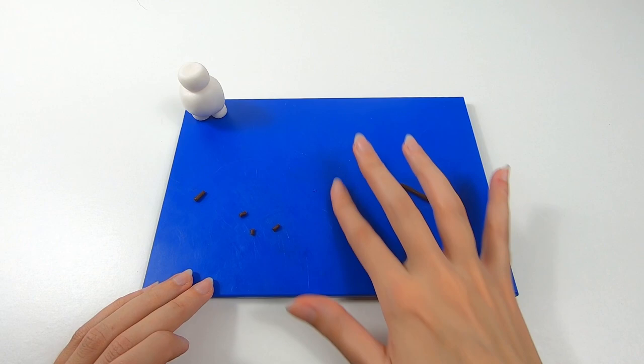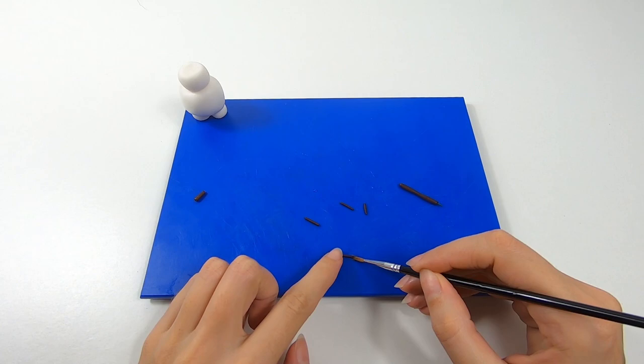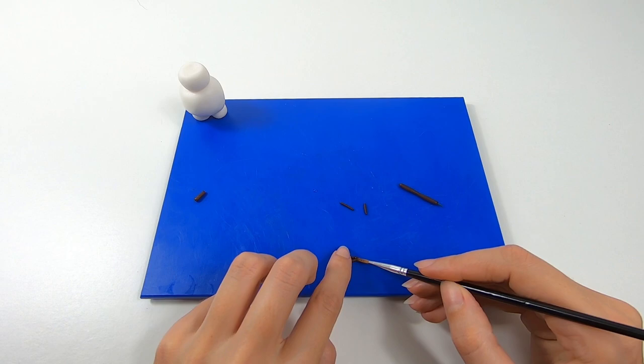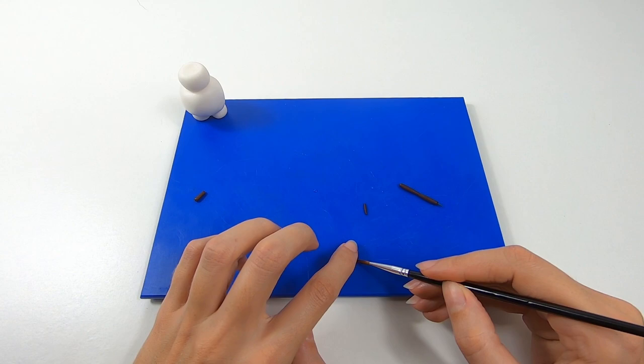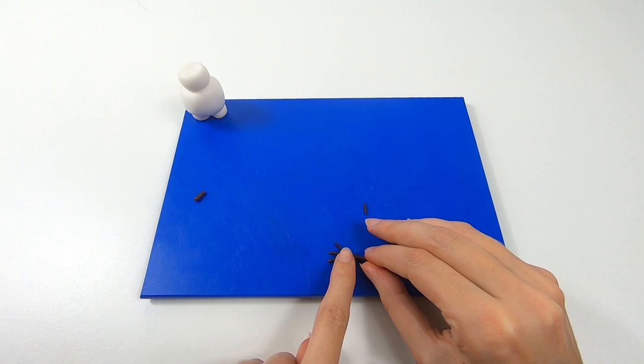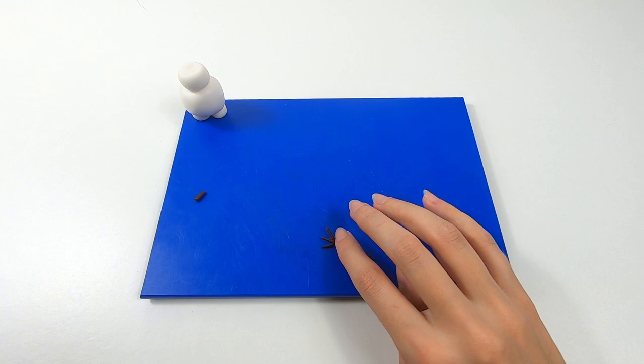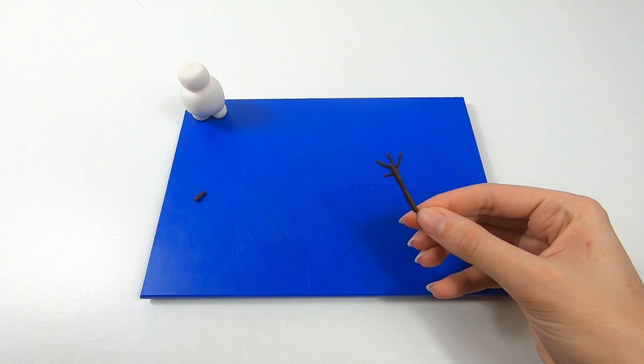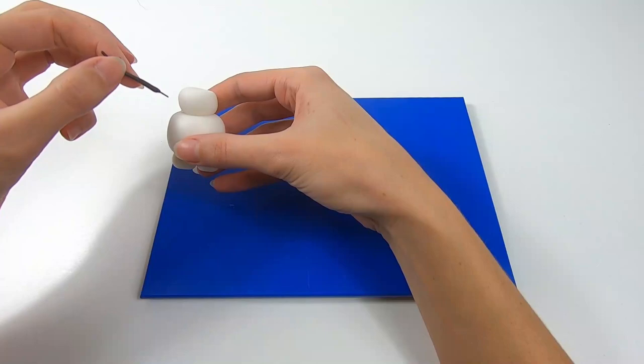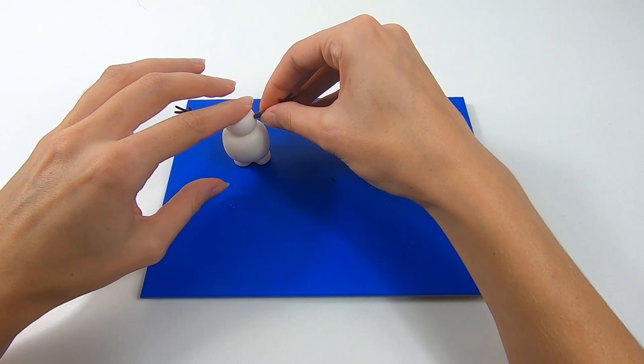For the hands, roll out three fingers and a thumb. Stick the fingers together in a crow foot shape. And then stick the arm on top. Flip the arm over and stick the thumb slightly further down. Repeat this for the other arm. And insert the exposed wire into the upper torso of Olaf.